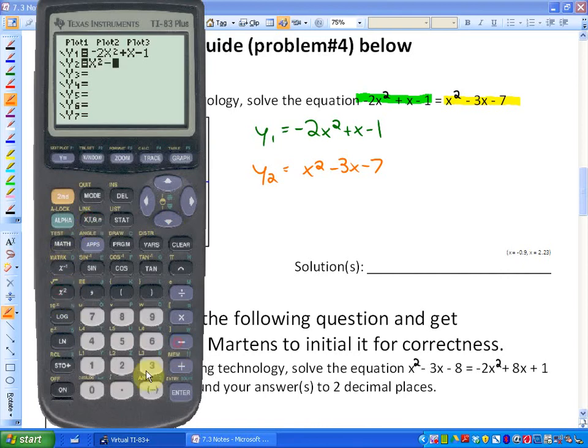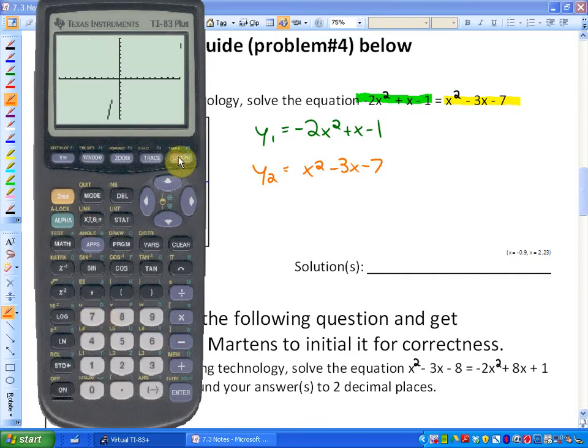I'm going to graph those functions and let's look at the interpretation. So it should have two graphs and it does. And you can look backwards at the 7.1, 7.2 lessons if you don't know how to graph functions.